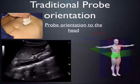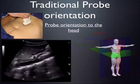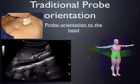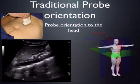In the long axis orientation — also known as the sagittal plane — the probe indicator is rotated from the patient's right up toward the patient's head. With the indicator pointing toward the head, the top of the screen corresponds to the patient's head and the bottom to their feet. In this view you can see the aorta in long axis, the celiac trunk, the superior mesenteric artery, the spine, and the liver.